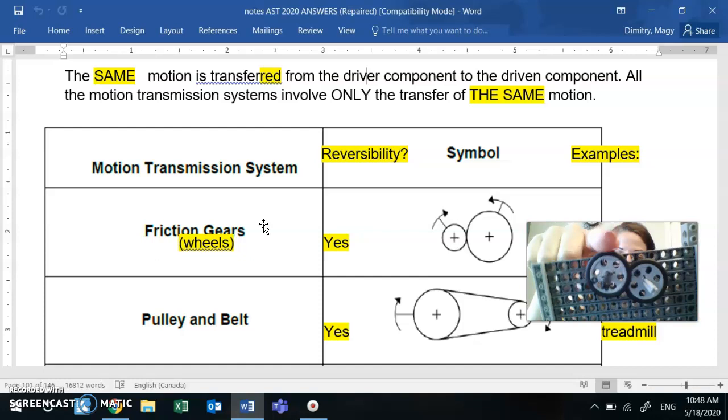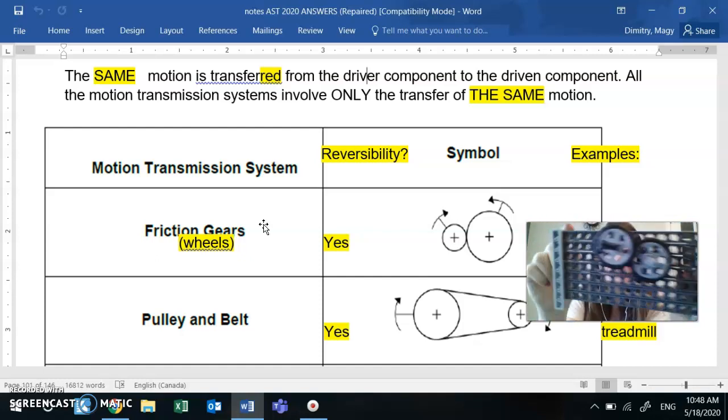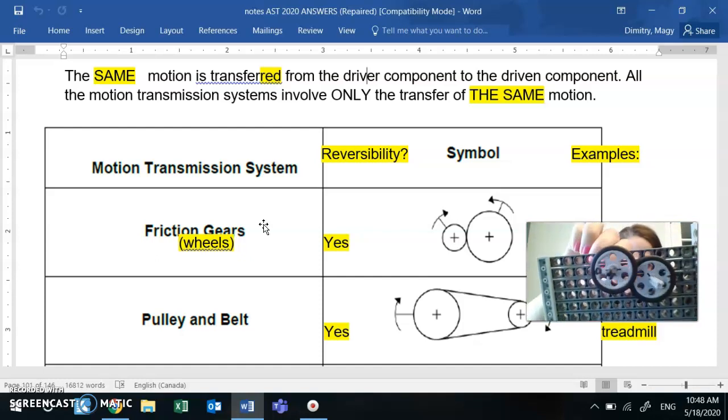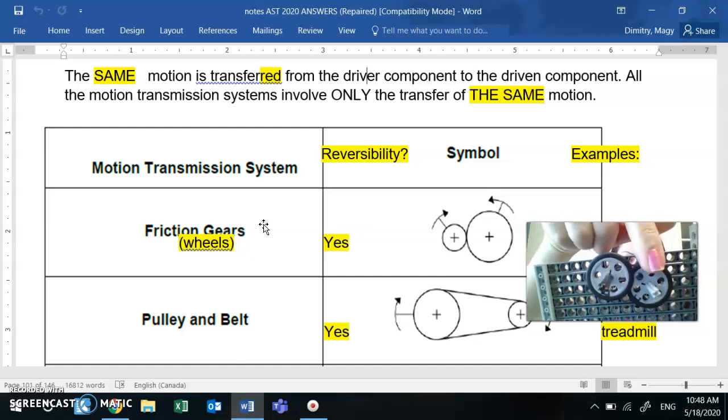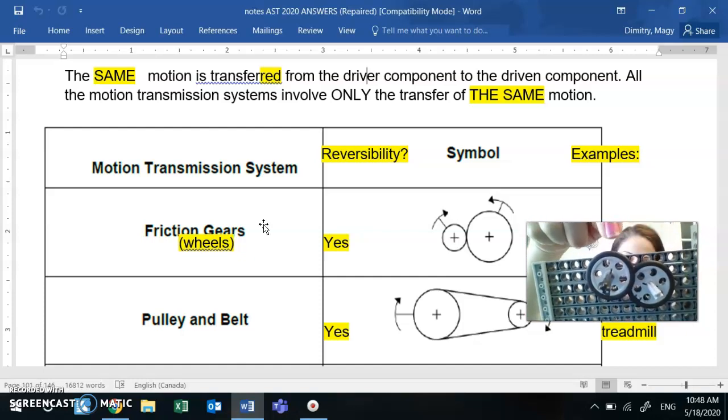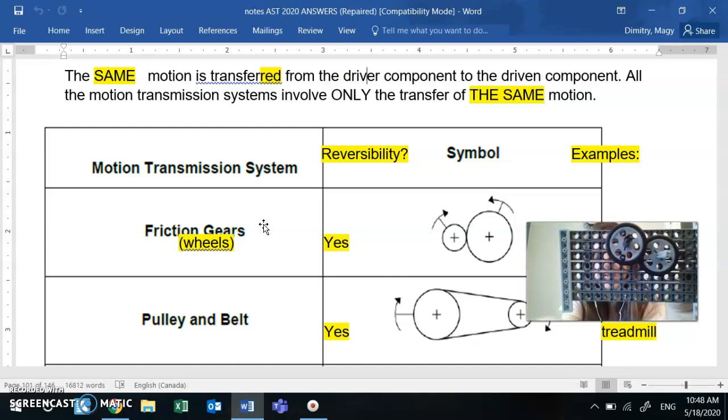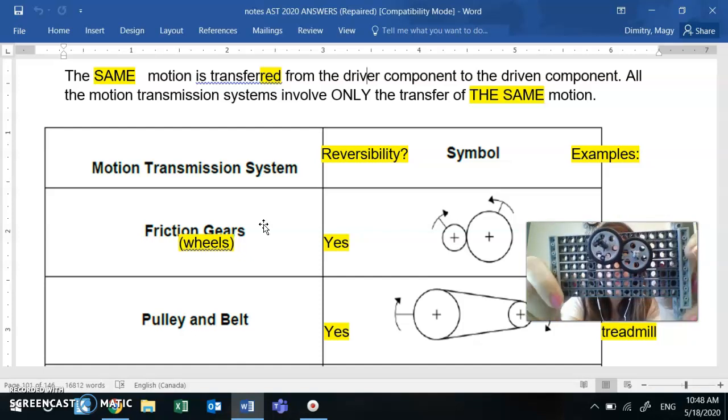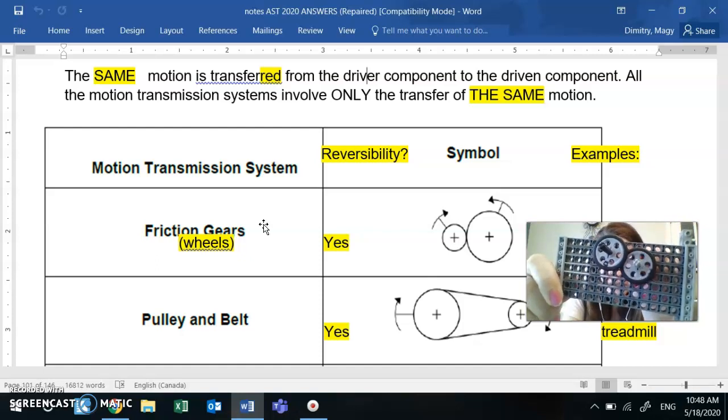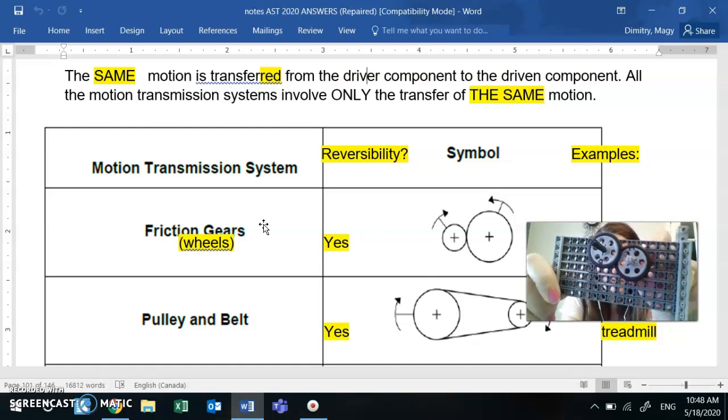Let's say that the one that's over here, letter B, if I spin that one that's my driver and the driven moves as a consequence of the driver moving. Now when I say reversible, can I switch? Can the driven become the driver?